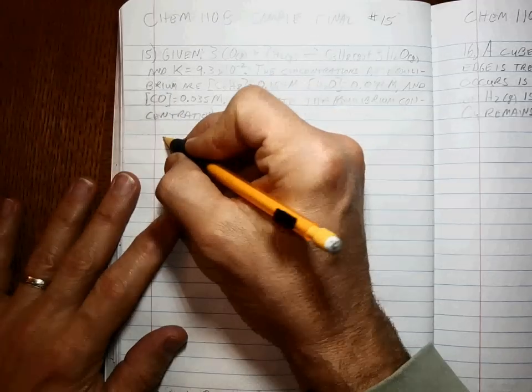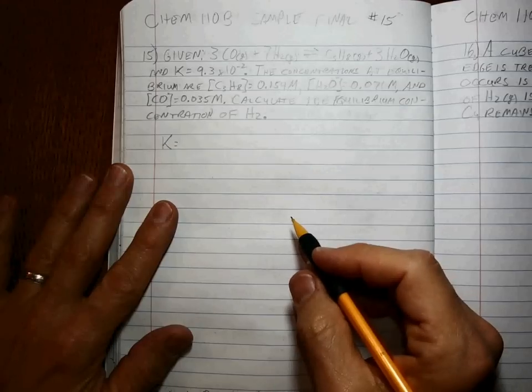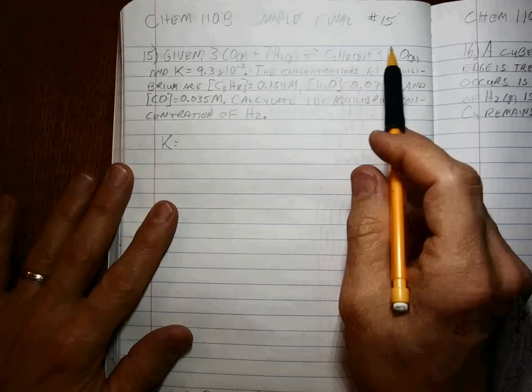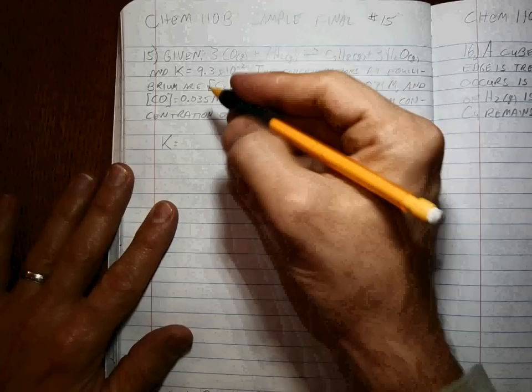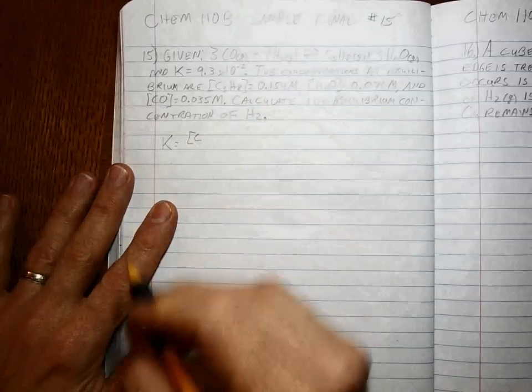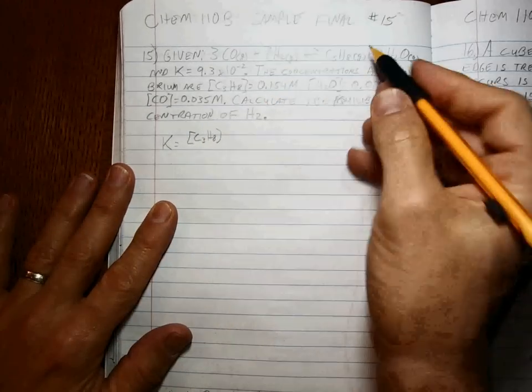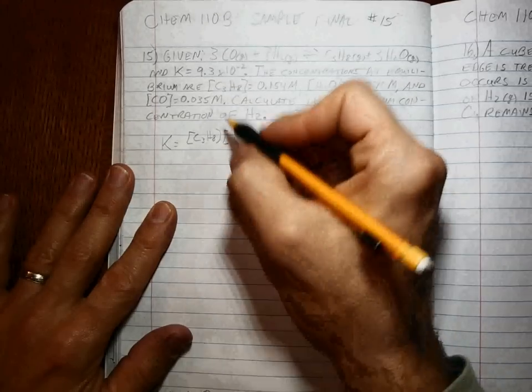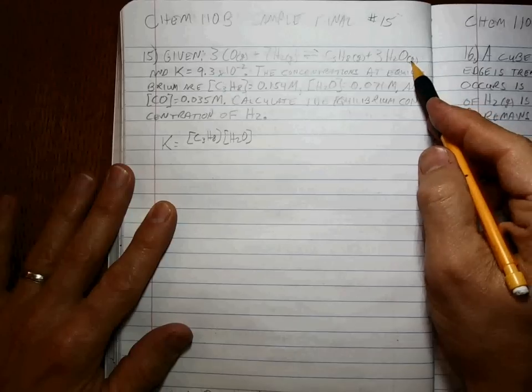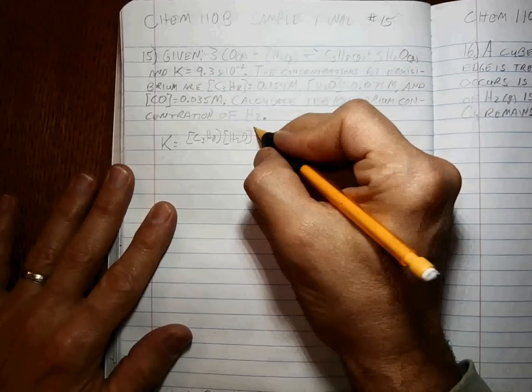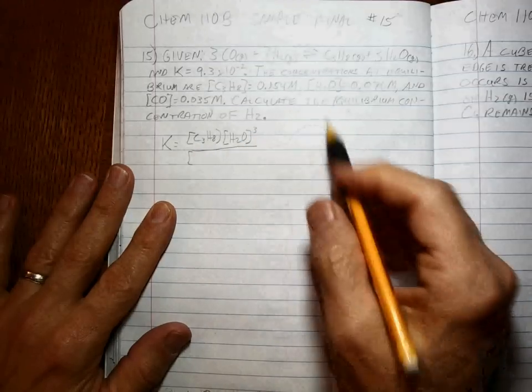the equilibrium constant expression. That is products over reactants. It's product concentrations taking the power of their coefficients multiplied together, making sure that gases or aqueous are used. Solids and liquids are not.